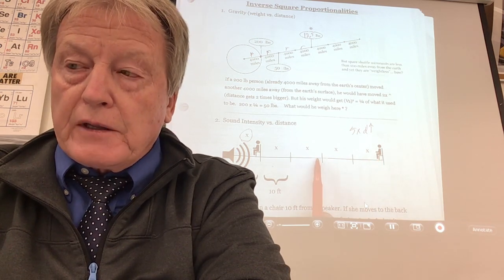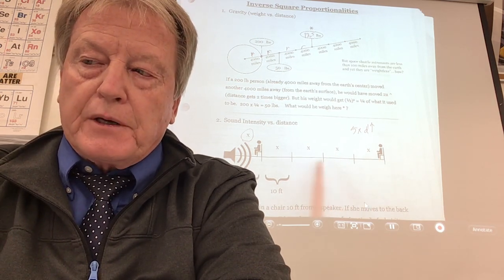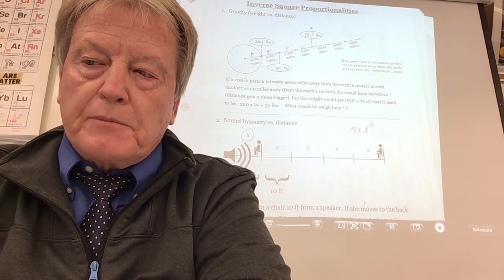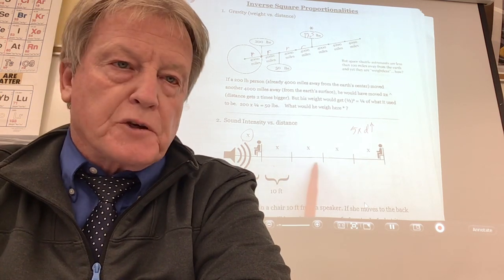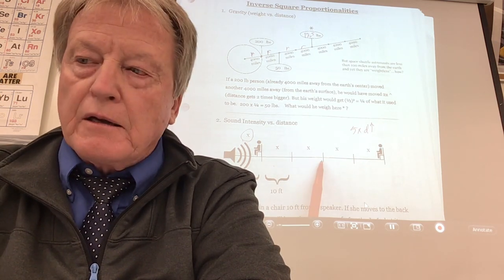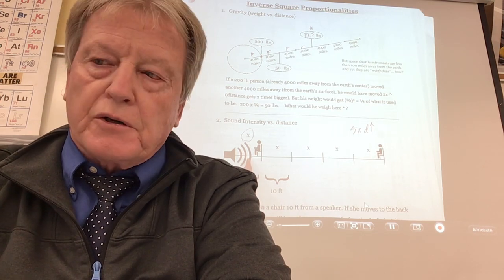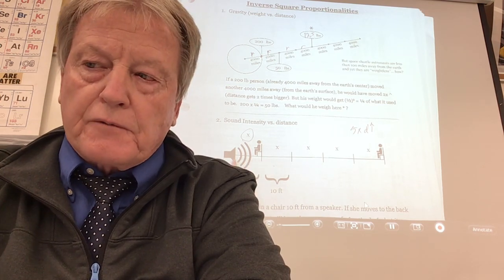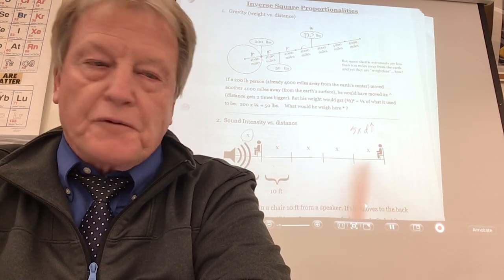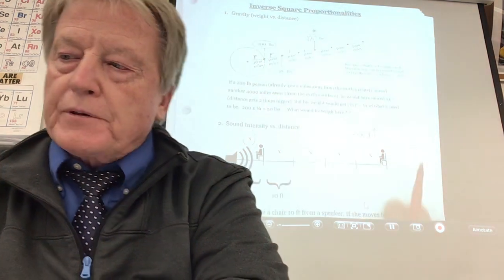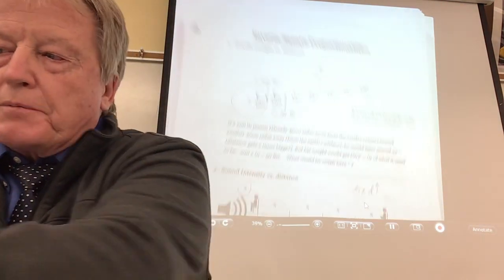To prevent that, nowadays people simply have some speakers for the people in the front and then hook up additional speakers in the back, so they don't have to blast people. Even churches do that — speakers for the front people and speakers for the back people. So that's another inverse square proportionality.